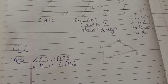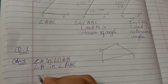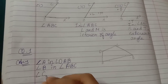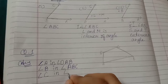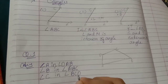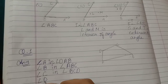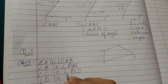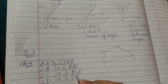Then we are going on to C. At vertex C, we will write angle BCD. And at the end, at vertex D, we will write angle CDA.